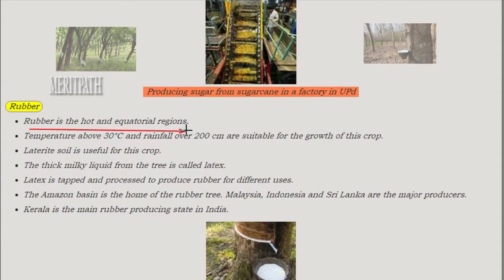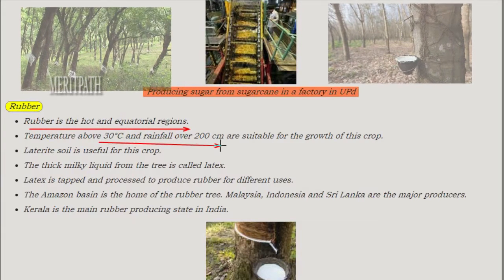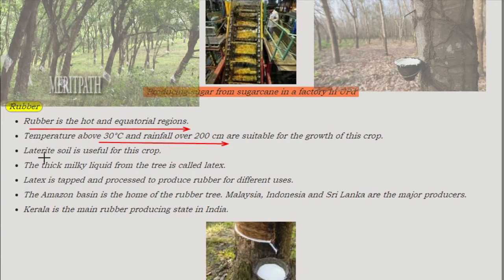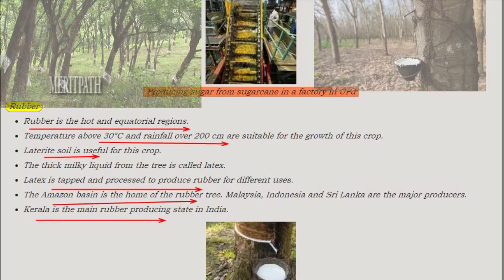Rubber is grown in hot and equatorial regions. It requires a temperature of 30 degrees centigrade and rainfall over 200 cm. Laterite soil is used for this crop. Latex is tapped and processed to produce rubber for different uses. The Amazon Basin is the home for rubber trees. Malaysia, Indonesia, and Sri Lanka are the major producers of rubber in the world. Kerala is the major rubber producing state in India. Latex is extracted from a rubber tree.